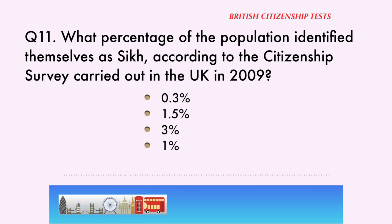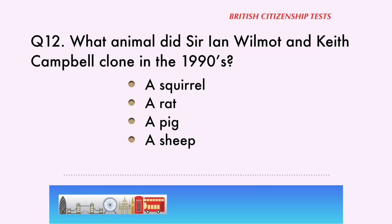Question 11. What percentage of the population identified themselves as Sikh, according to the Citizenship Survey carried out in the UK in 2009? 0.3%, 1.5%, 3%, 1%. The correct answer is: 1%.